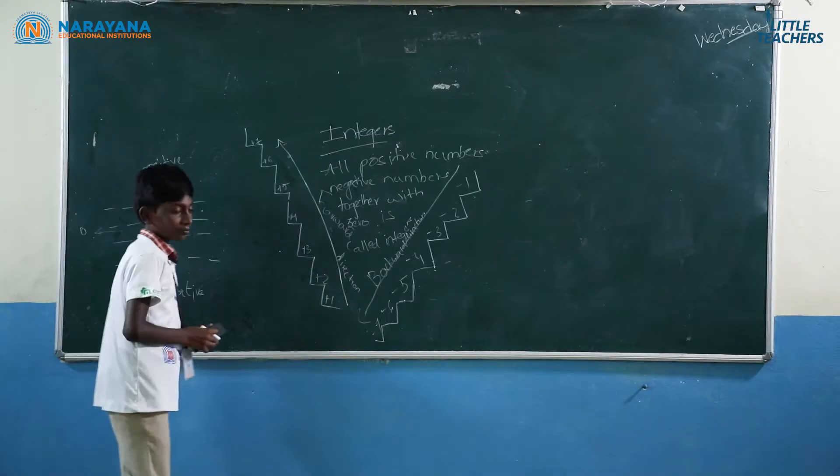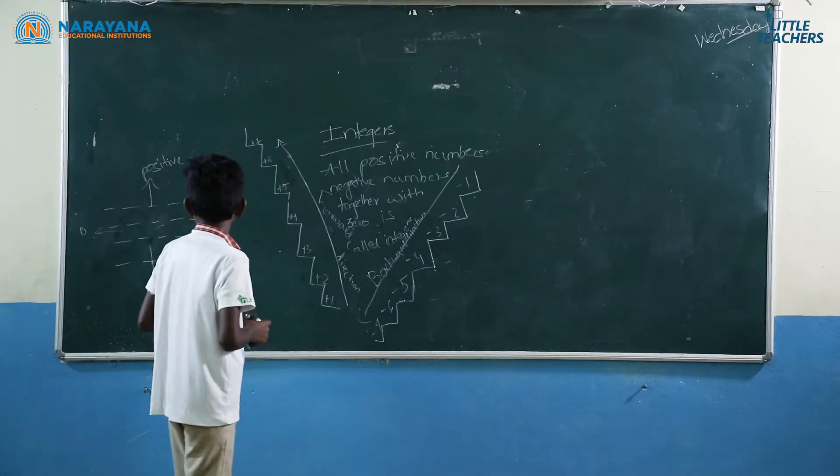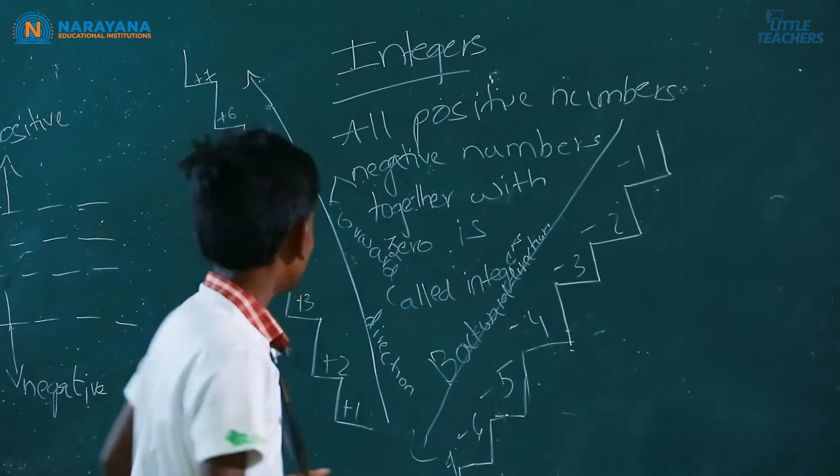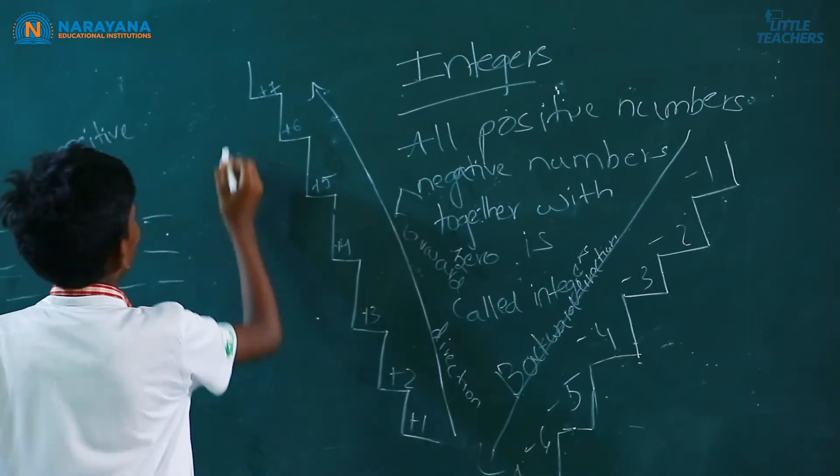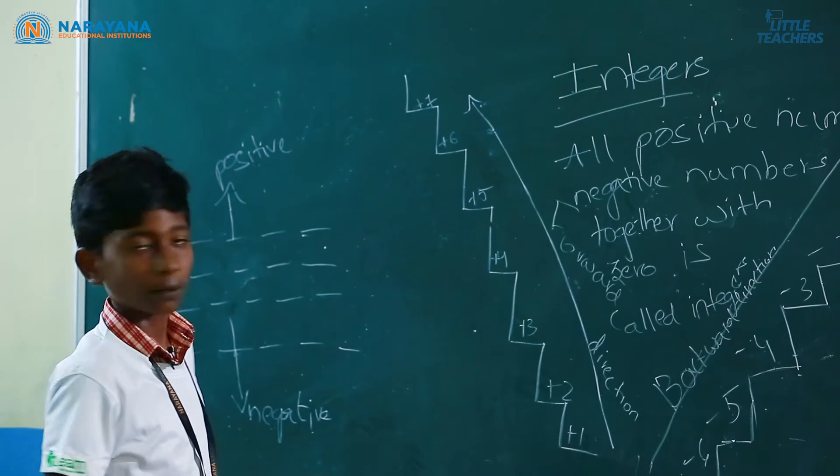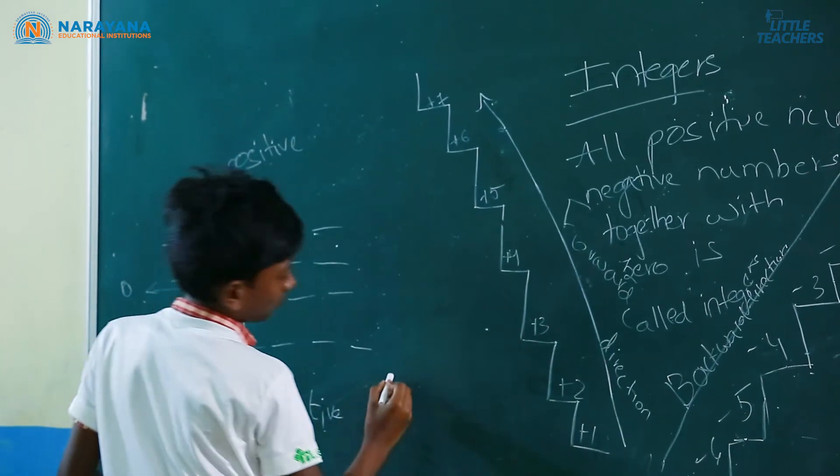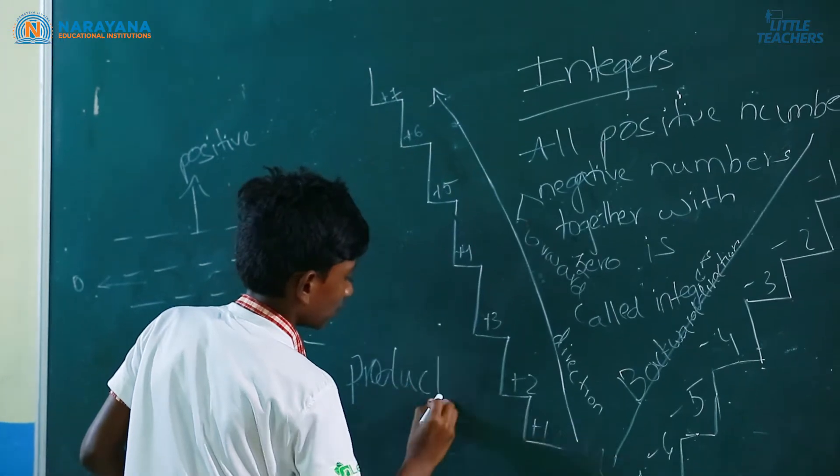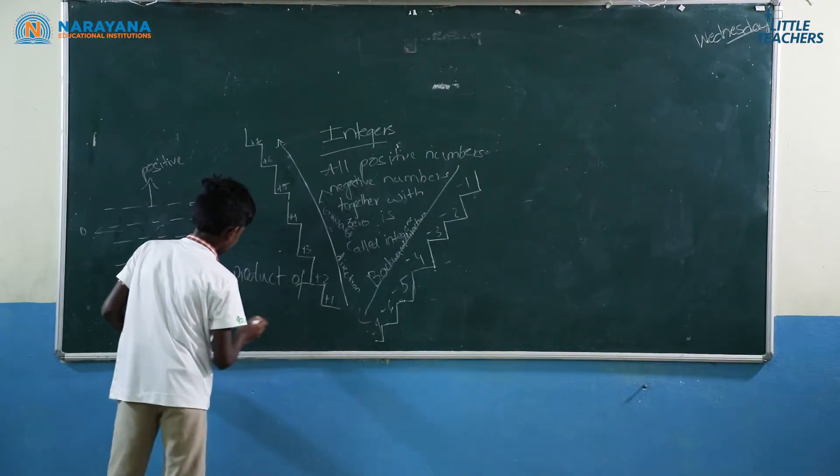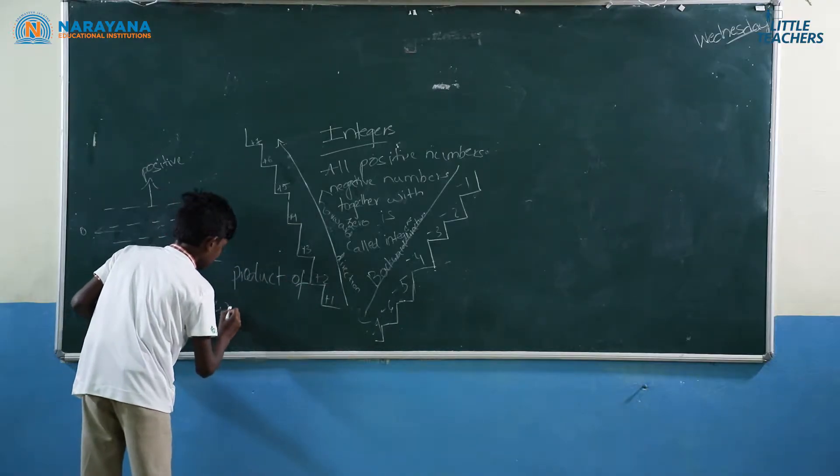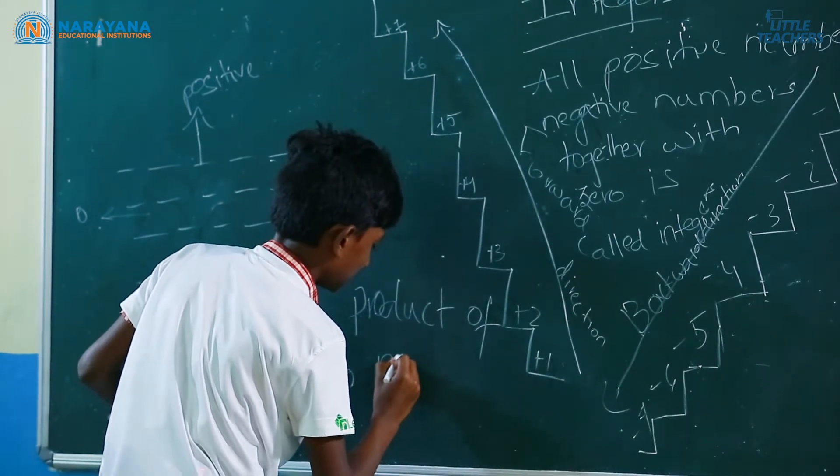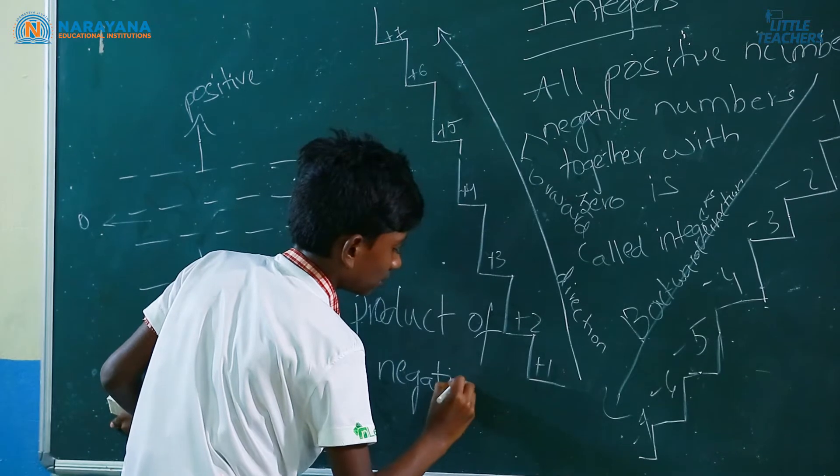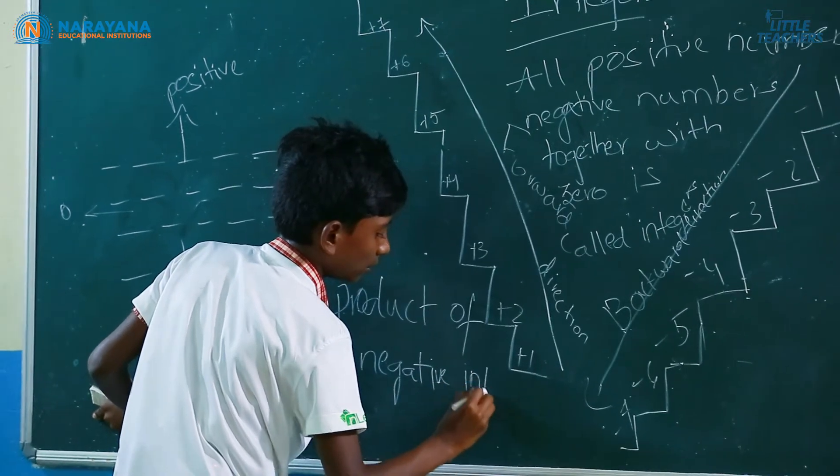Let's take another example. Now, I am going to my subtopic: product of 2 negative integers.